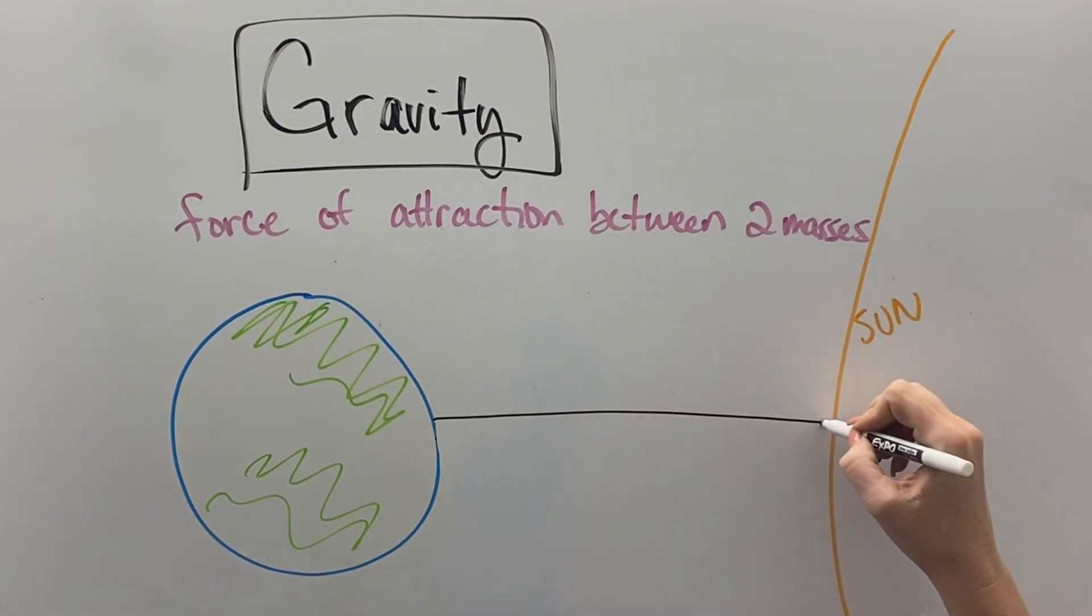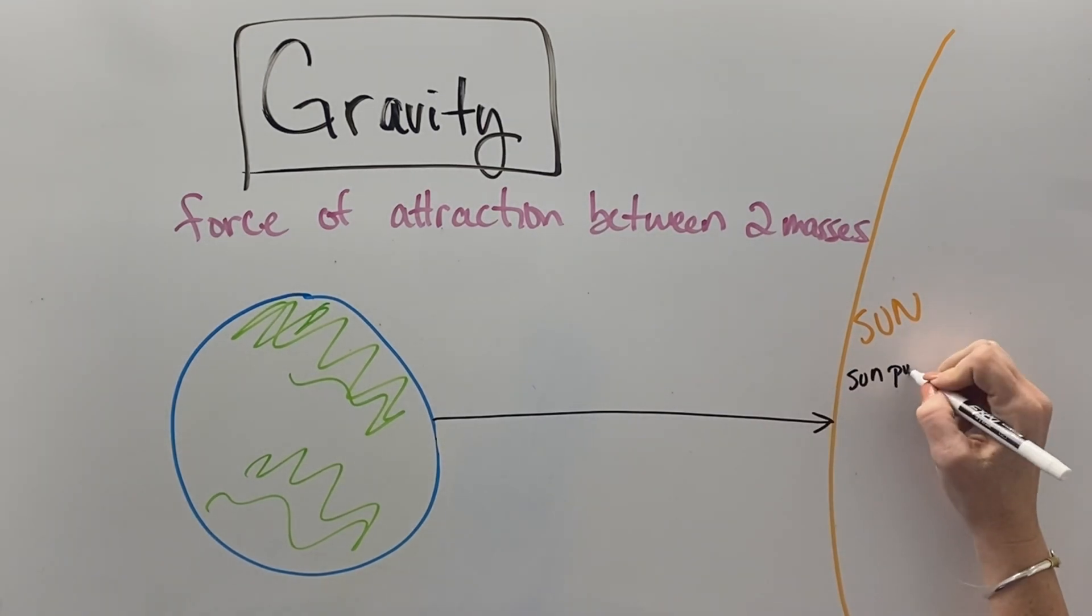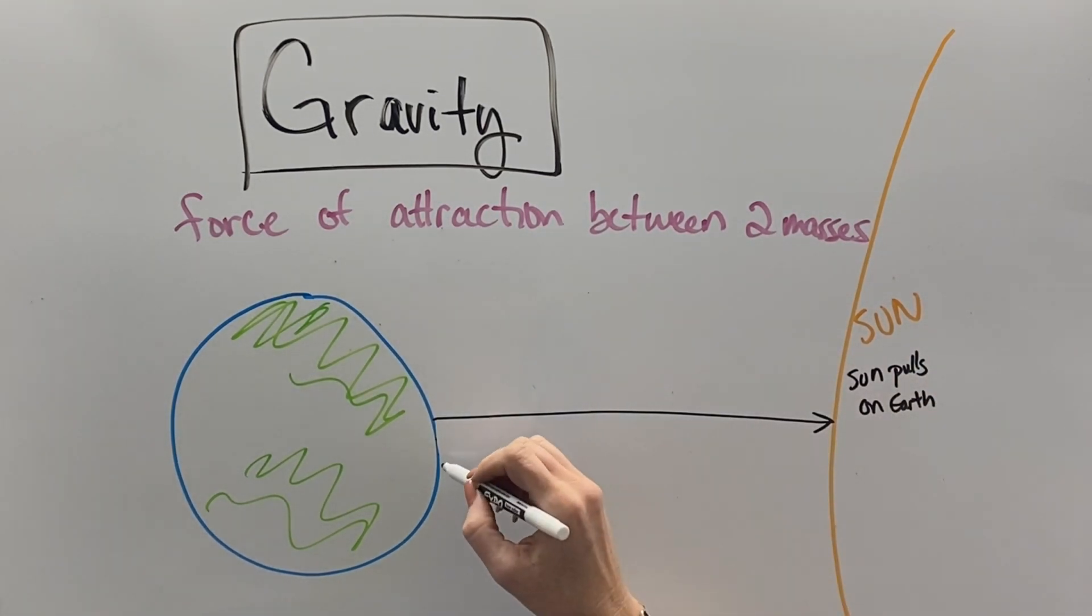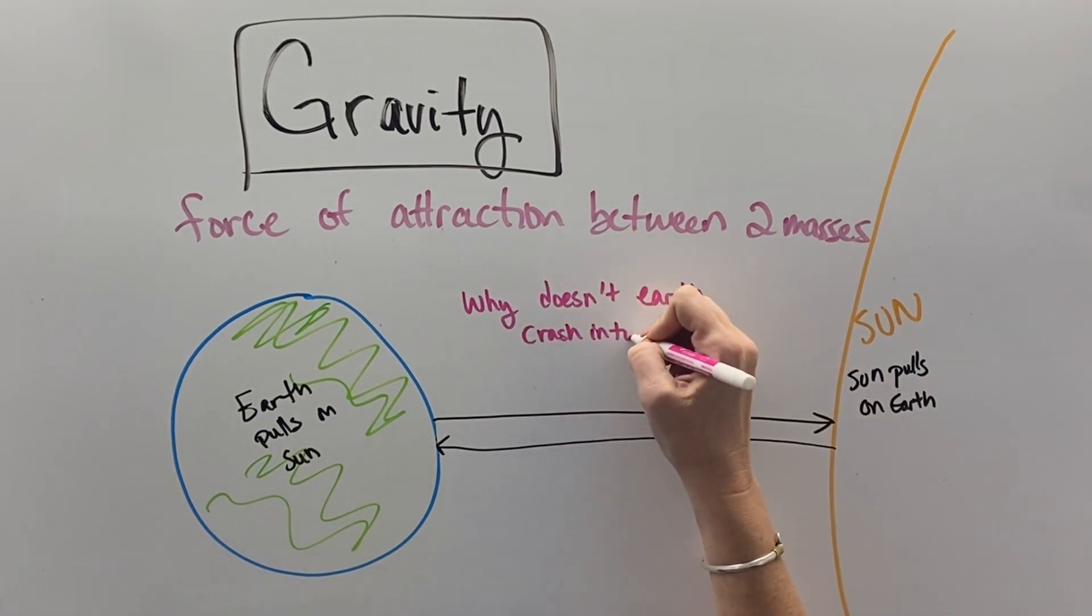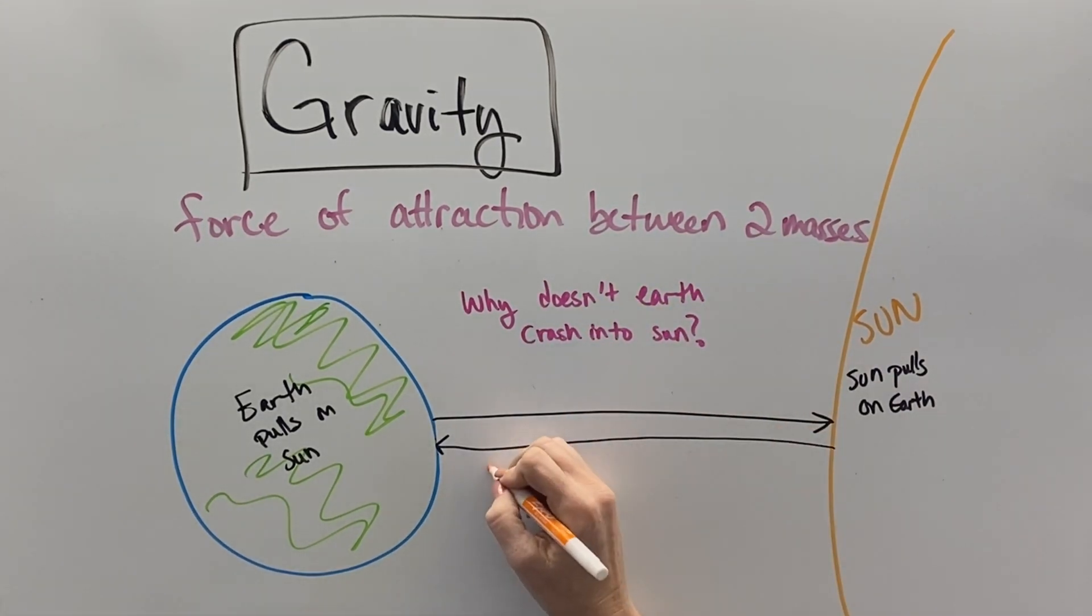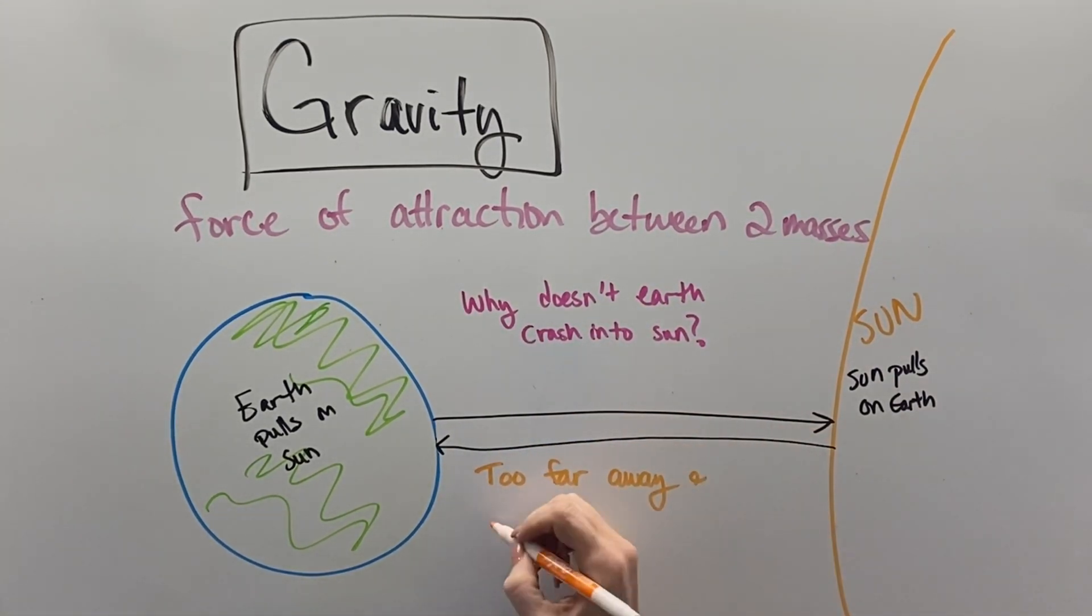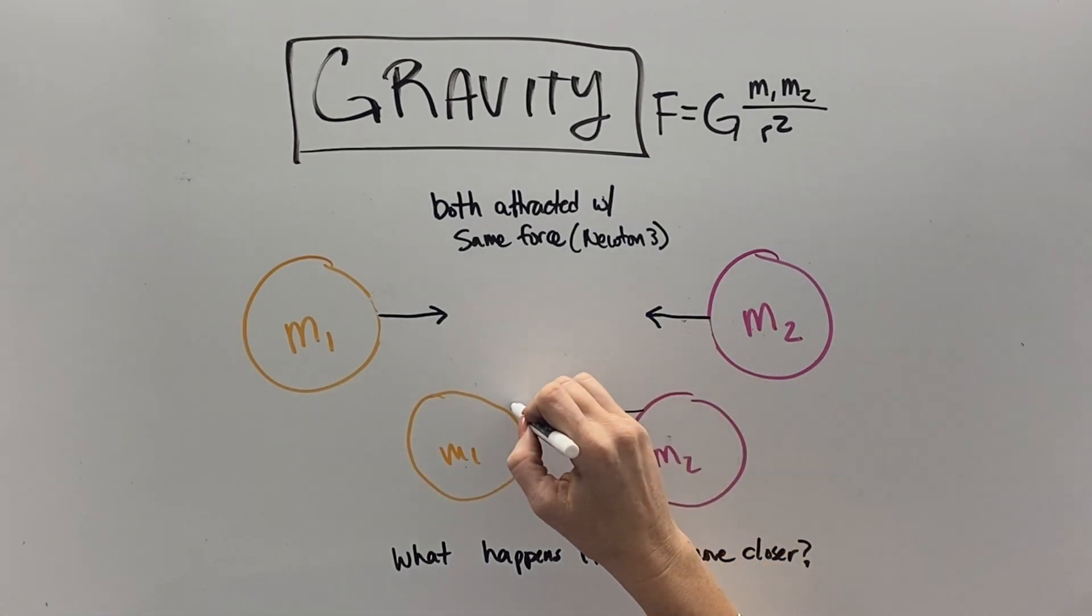This kind of is what is going on with us and the Sun. Our mass is attracted to the Sun, and the Sun's mass is attracted to the Earth. So, both planets, or the star and the planet, sorry, pull on each other. But why doesn't the Earth go crashing into the Sun? Well, the first thing is that we're too far away, and the second thing is that we're moving really, really fast. So, we kind of are constantly outrunning the Sun, and this is what orbit is.